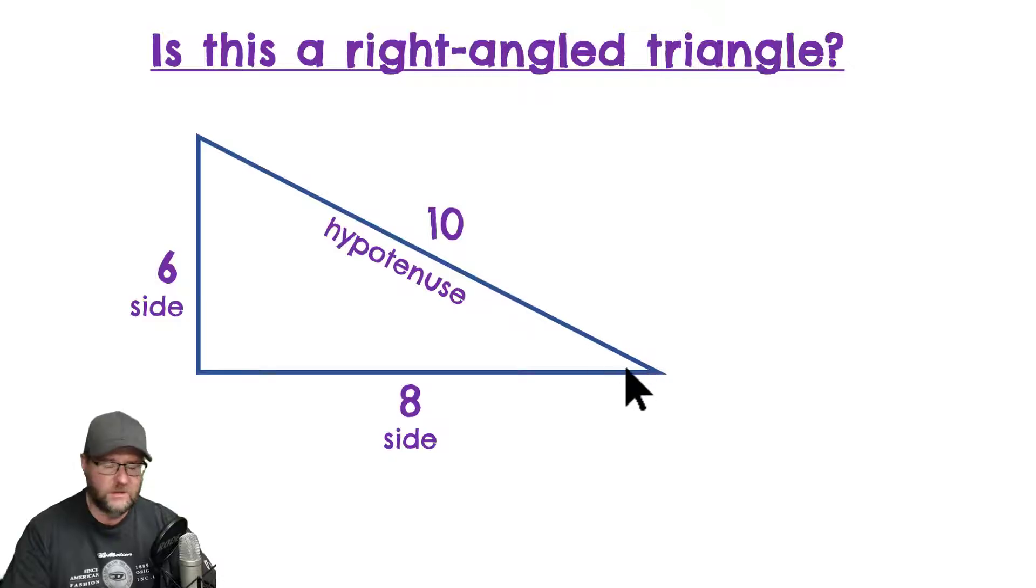Now, remember, if this was a right angled triangle, this longest side would be called the hypotenuse. And this is always the longest side. It's always the one opposite the right angle. So, let's assume for a minute that it is, but we're going to prove it mathematically.